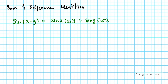If you notice what happens here: when you do the sum identities for sine, the trig functions switch but the sign stays the same. So if it were minus — sine x minus y — it's going to be sine x cosine y minus sine y cosine x. Just remember to alternate the trig functions and keep the sign.